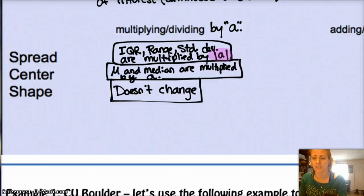Because, it's not going to change the direction of the spread. But the mean and the median, both centers, are multiplied by the value. Regardless, yes, including the positive or negative. Okay. Shape doesn't change.